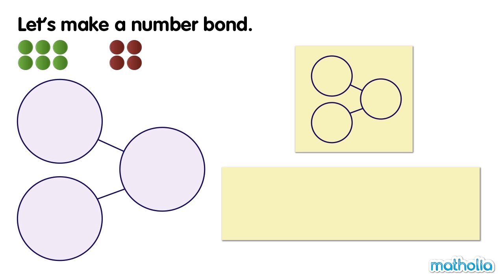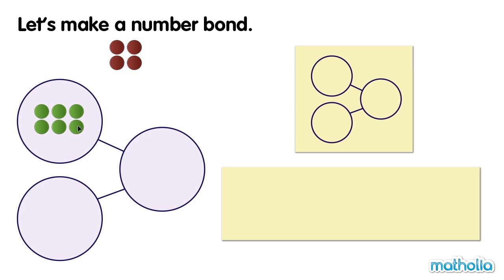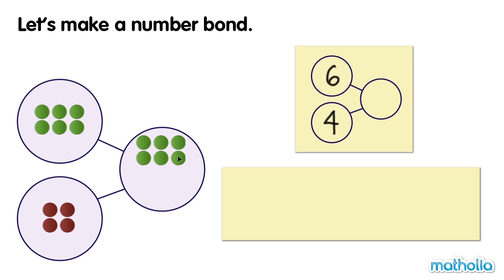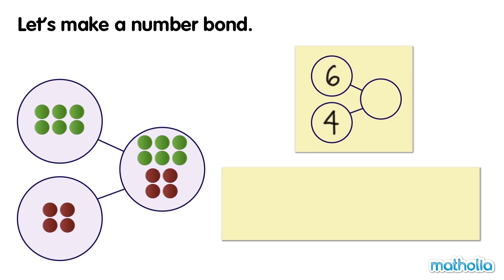How many counters are there all together? There are six counters and there are four counters. Six and four make ten.